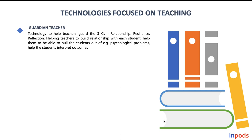The three R's are relationship, resilience, and reflection — not three C's. Teachers should be able to help students rise from failures. If a student is getting demotivated or nervous about something, teachers should be able to sense this and help the student rise from failure. Teachers should also be able to show reflections of what students are learning — like holding up a mirror — using predictive analysis. Helping teachers build a relationship with each student and pull students out of psychological problems is going to be a key function of teachers.